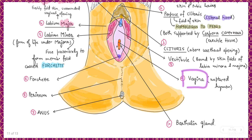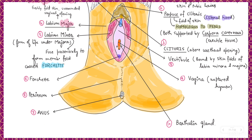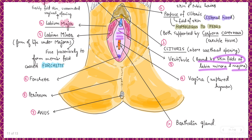Around the vagina there are small openings in pairs called Bartholin's glands, which help in lubrication and help neutralize acidity. The region between the urethra and vagina is called the vestibule, which is bound by the skin folds of both the labia minora and labia majora.